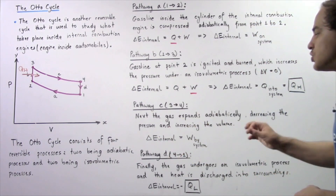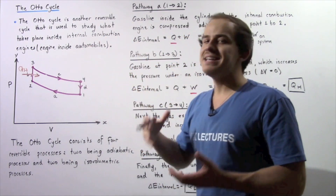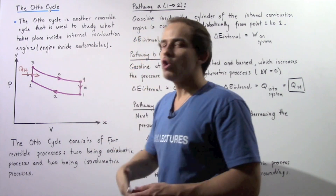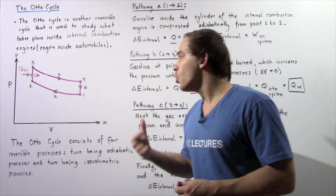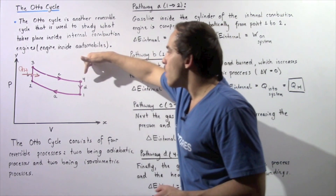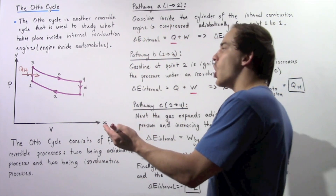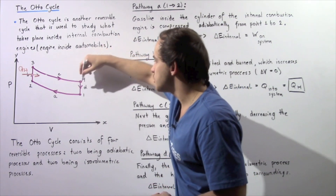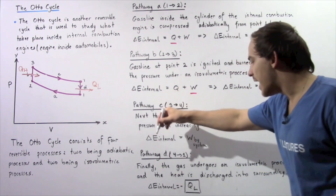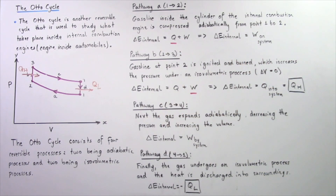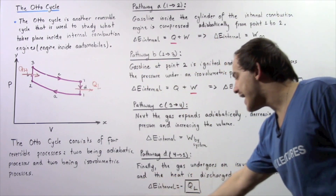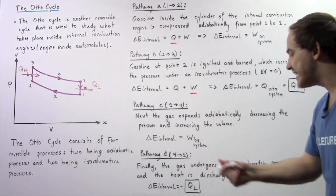Finally, pathway D begins at position four and ends at position one. Once again, we're dealing with an isovolumetric process, so volume remains constant. Since the change in volume is zero, there is no work done by or on our system. However, heat is exchanged with the surroundings. Because our pressure decreases, heat must flow out of our system into the surroundings. When we go from position four to position one, heat flows out of our system, symbolized by QL. The gas undergoes an isovolumetric process and heat QL is discharged into the surroundings. The change in internal energy is equal to negative QL, where the negative sign means heat is discharged into the environment.